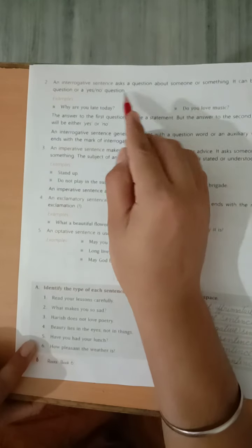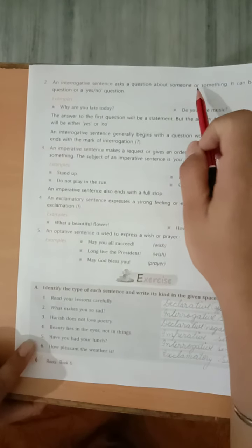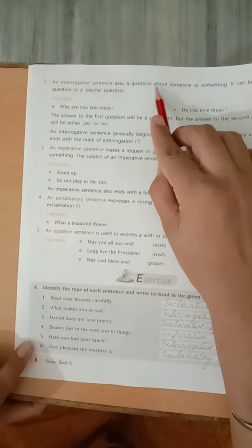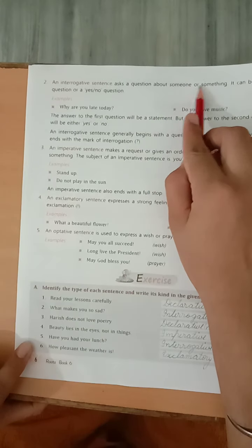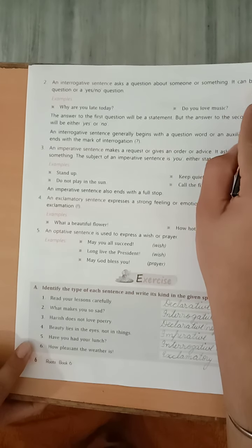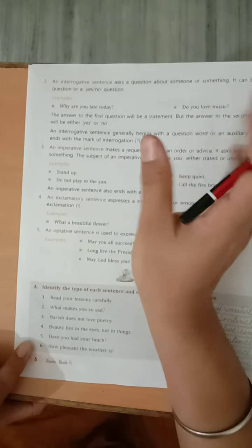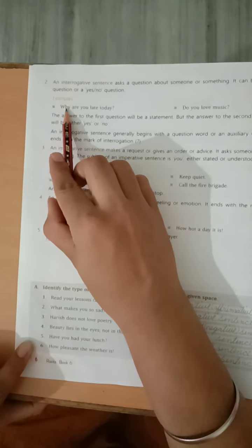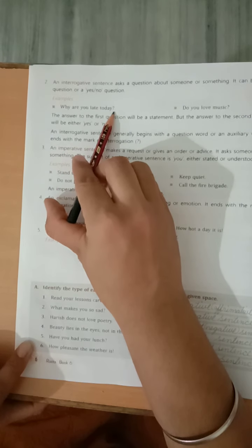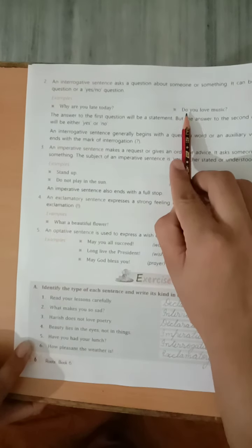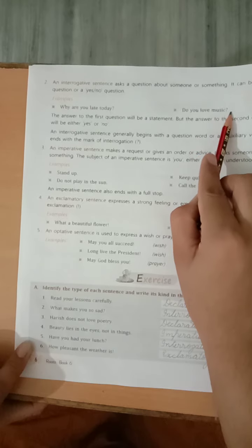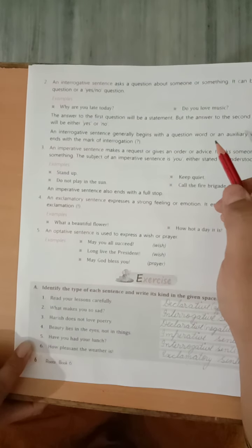Now, an interrogative sentence asks a question. Isme the question form mein aapko ye puchha jata hai about someone or something. It can be wh question or yes, no question. Matlab why, what, aise question ke form mein ye hota hai. For example, why are you late today? Ye question ke form mein hai. Do you love music? Ye bhi question ke form mein. Ismein a question puchha jata hai. Okay?